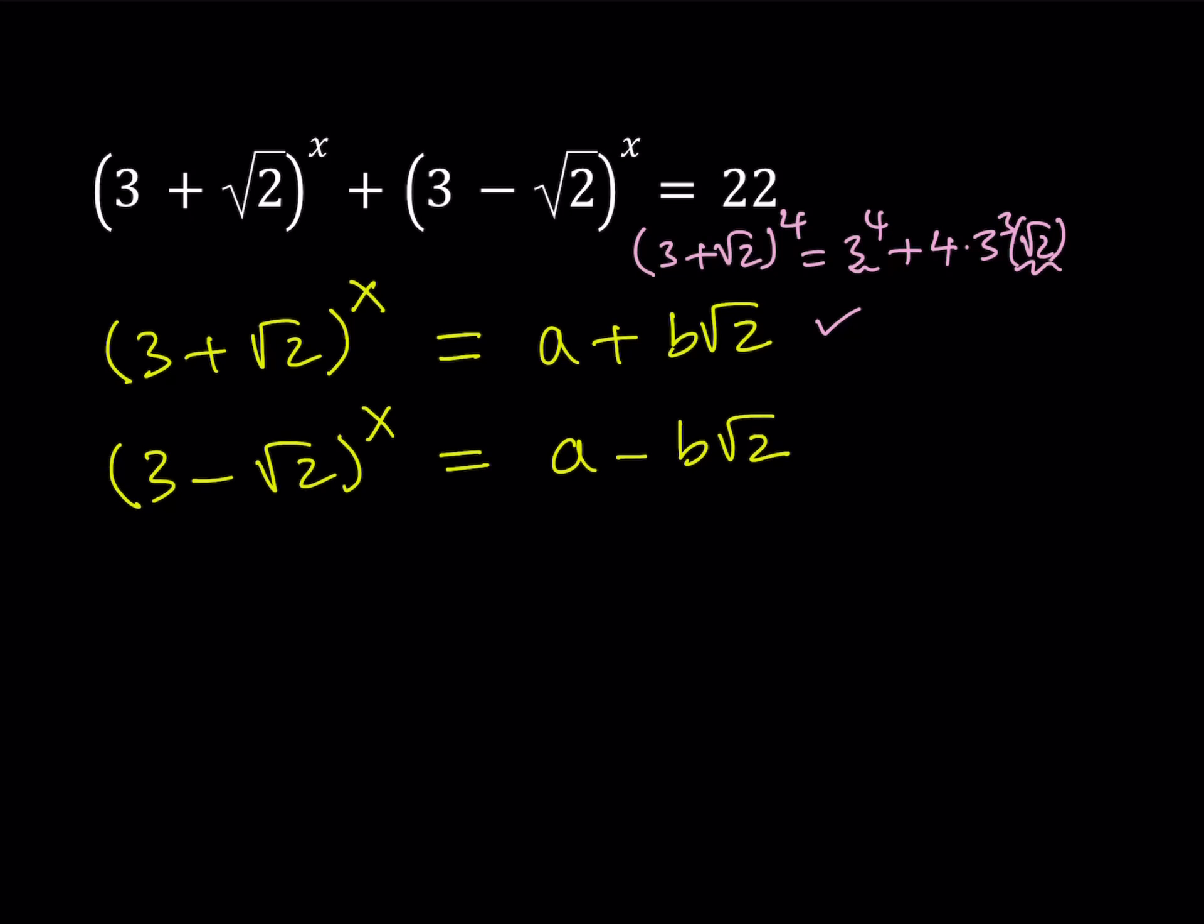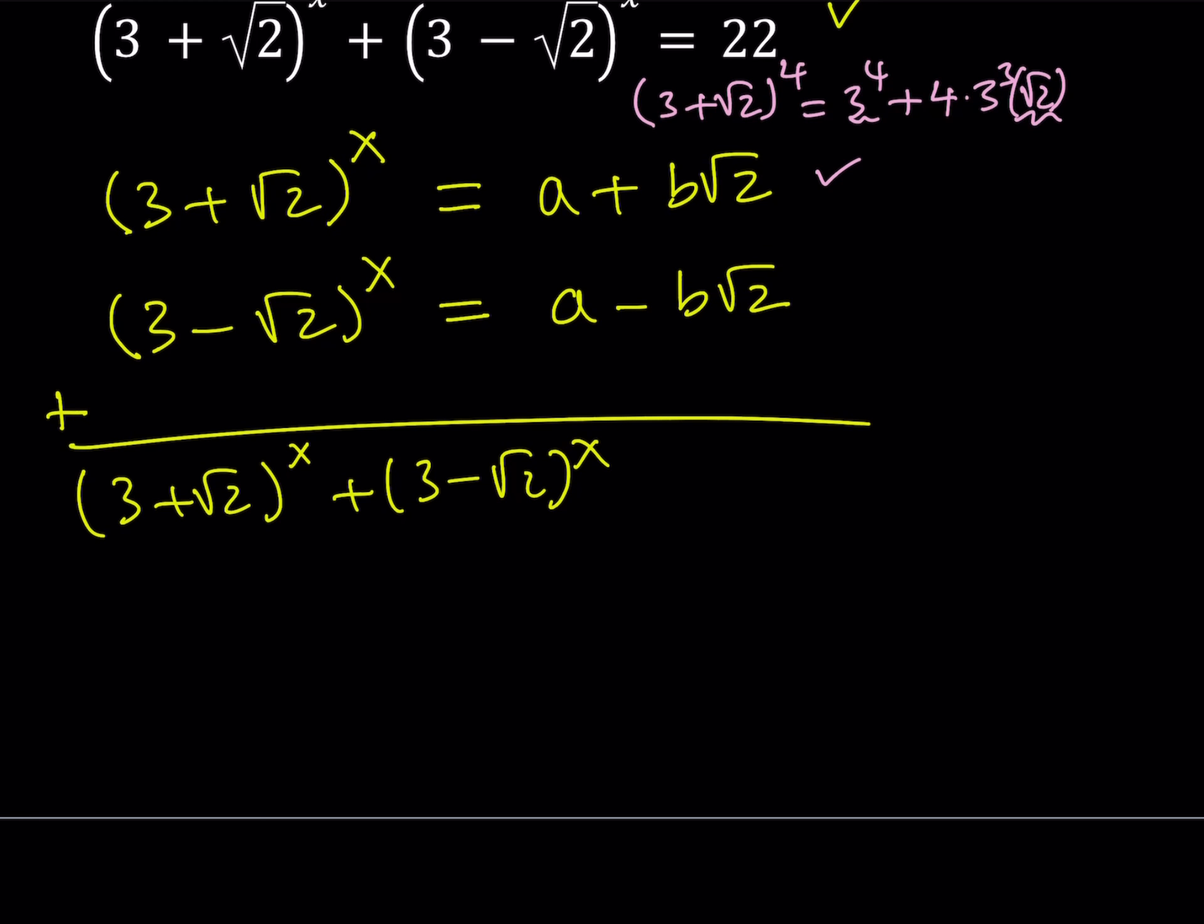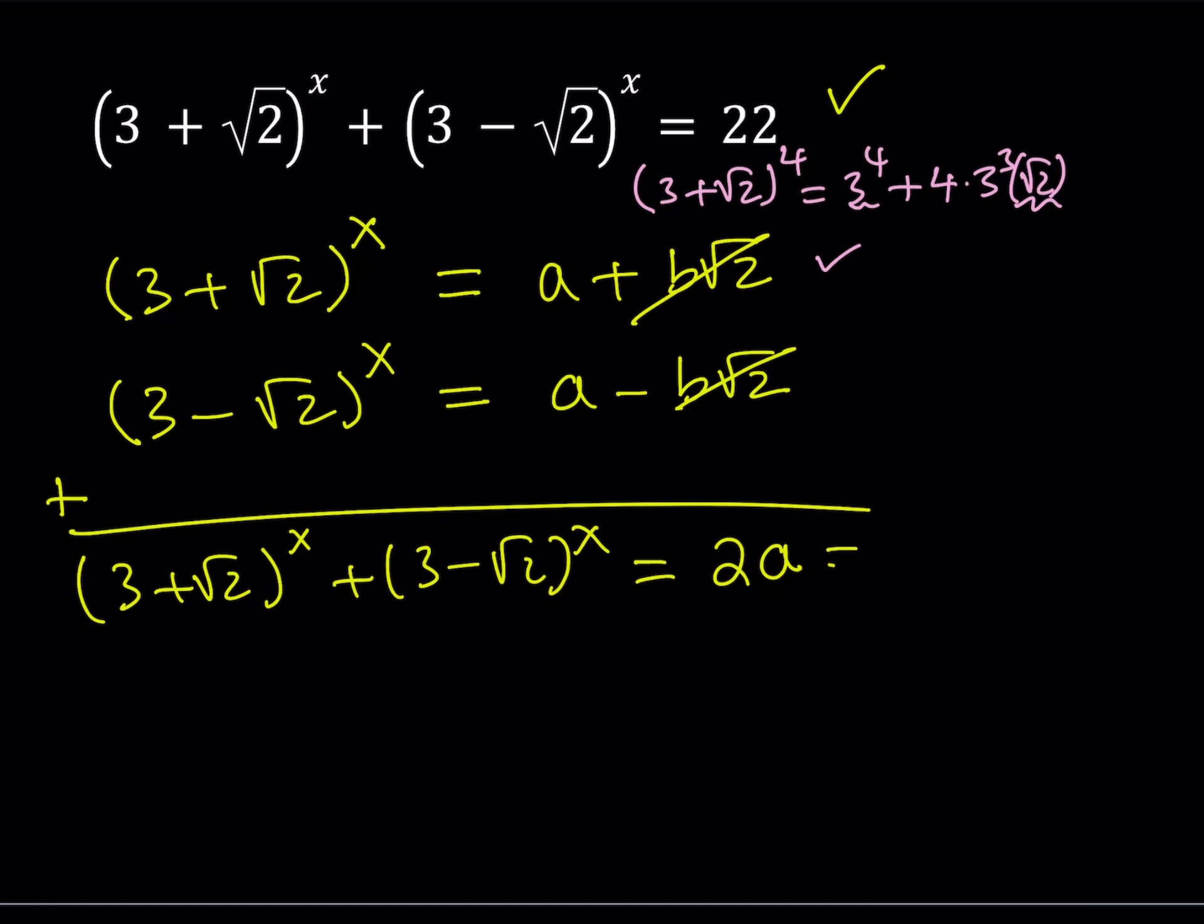So now this gives us something real nice. Why? Because we can add these, and that's what we exactly have on the left-hand side. So let's go ahead and do it. Basic algebra arithmetic. If you add these two expressions, you're going to get (3 + √2)^x + (3 - √2)^x. And we know that on the right-hand side, things are going to cancel out and we're going to end up with 2a. On the right-hand side, we have 22. That means a = 11. Beautiful. We got the value of a so easy. Is that going to be the same for b? Let's find out.